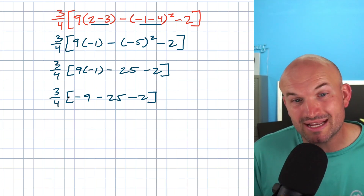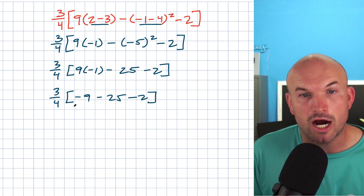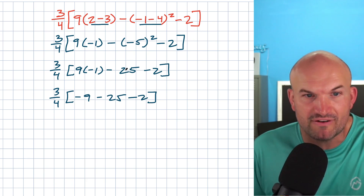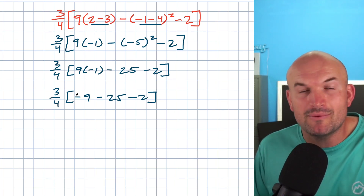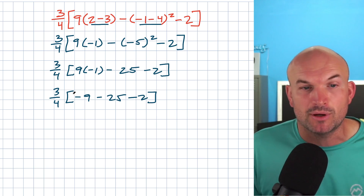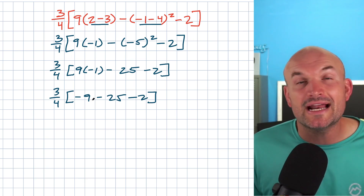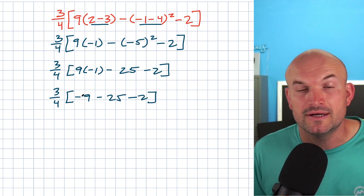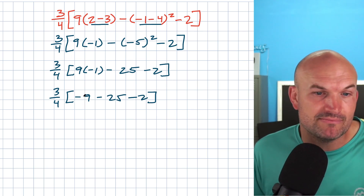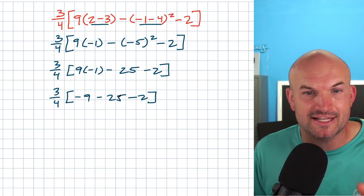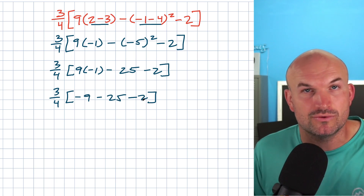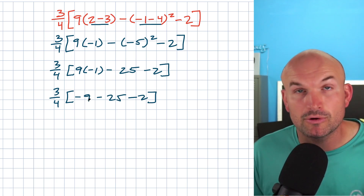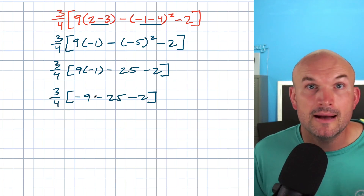Now in this last row, we still need to simplify our grouping symbol. So we got rid of all of our parentheses, but now we have this grouping symbol of brackets. I want to simplify inside of there. Now you can see I have a minus nine, minus 25, minus two.